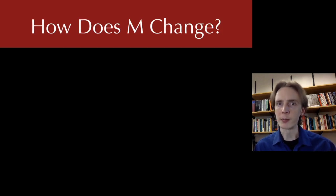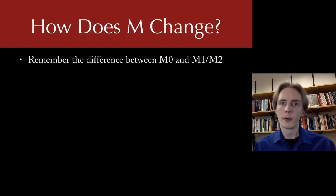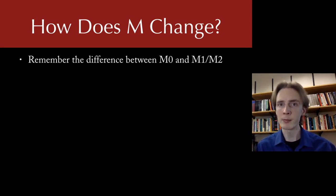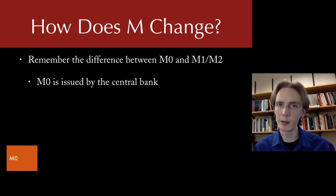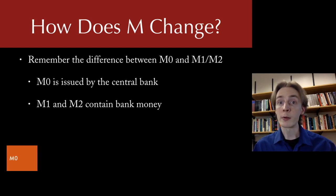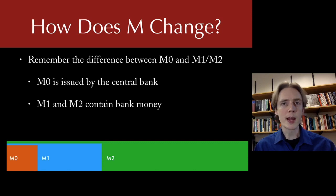Let's start with changes in the money supply. We can break this into two different types of money supply changes, so we'll actually get six types of business cycle events rather than four. Remember there are different measures of the money supply: M0 is just base money, and M1 and M2 also include bank-issued money. M0 is issued directly by the central bank — that's our base money and a small portion of the total money supply. M1 and M2 include bank-issued money, which is the majority of what you and I think of as our money balances, and these are much bigger.